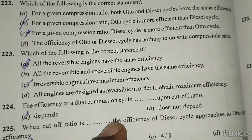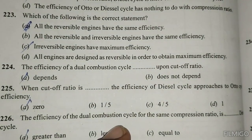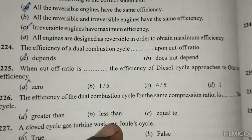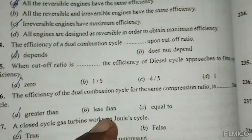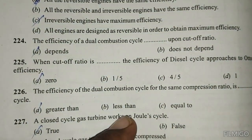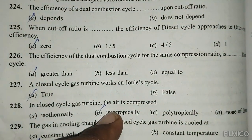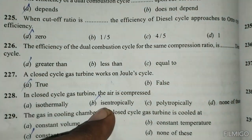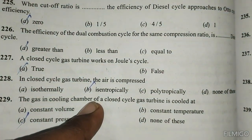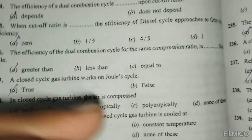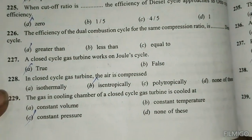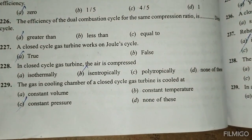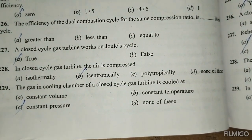Irreversible engines do not have maximum efficiency. The efficiency of the dual combustion cycle depends upon the cut-off ratio. When the cut-off ratio is zero, the efficiency of the Diesel cycle approaches Otto cycle efficiency. For the same compression ratio, the efficiency of the dual combustion cycle is greater than the Diesel cycle. A closed cycle gas turbine works on the Joule cycle. In a closed cycle gas turbine, the air is compressed isentropically. The gas in the cooling chamber of a closed cycle gas turbine expands at constant pressure.